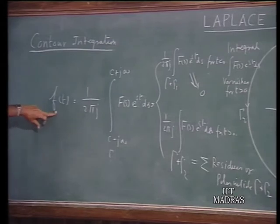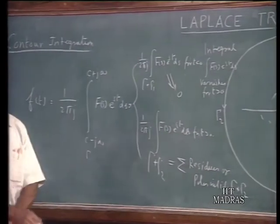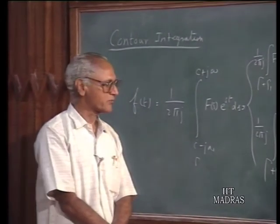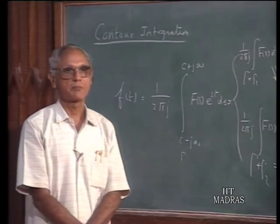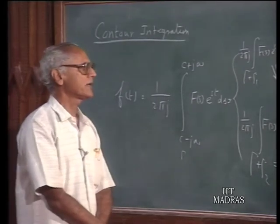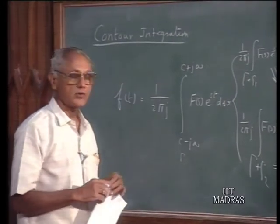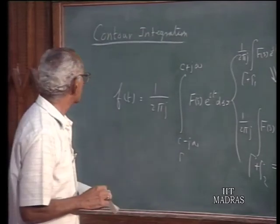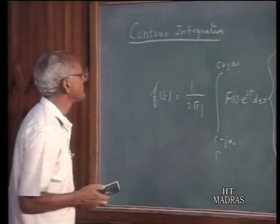In the inverse Laplace transform, f(t) will be identically 0 for t less than 0, and for t greater than 0 it equals the sum of the residues of the poles inside the contour. Our discussion here has necessarily been cursory, because contour integration is not the method we normally use for evaluating the inverse Laplace transformation. The partial fraction expansion is so much simpler and takes care of most of our needs. However, contour integration is more fundamental and may be needed for special types of functions where we may not know the inverse Laplace transform simply. We just mention that contour integration is an alternative method for finding the inverse Laplace transformation.